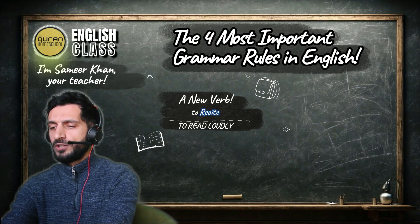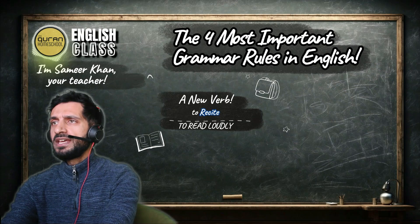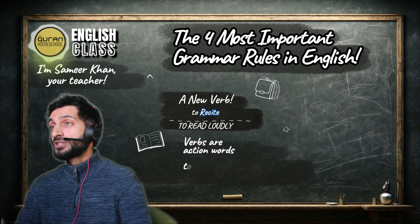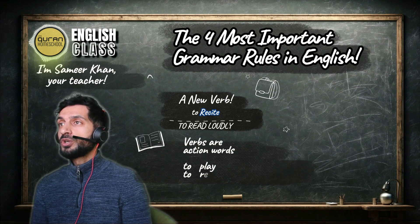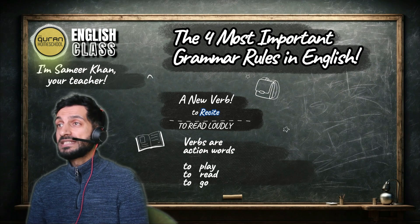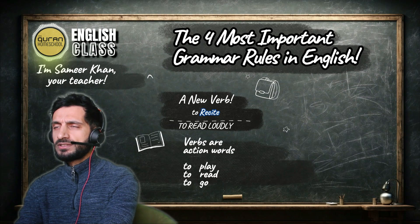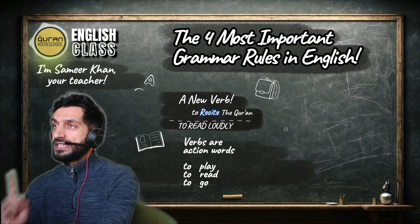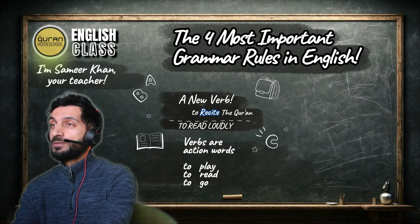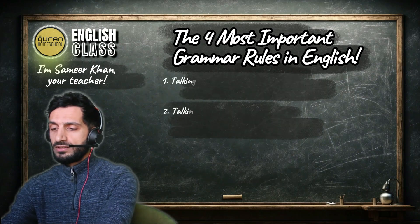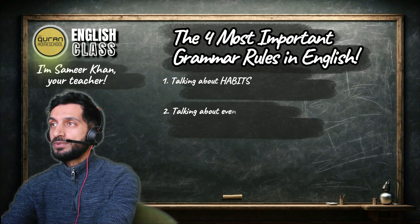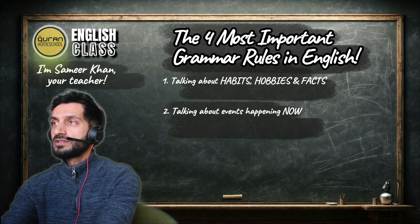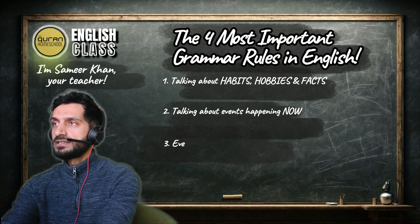In English we have verbs: to play, to read, to go. A verb is an action word — it shows that you are doing something. So to recite — for example, to recite the Quran — let's try to make four sentences using this verb.